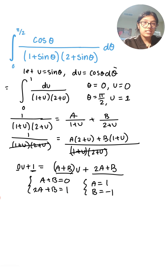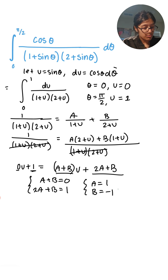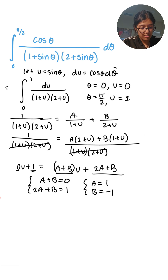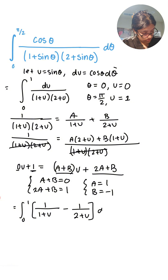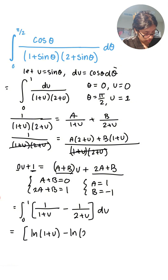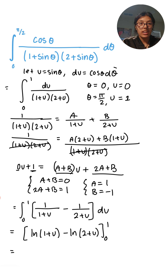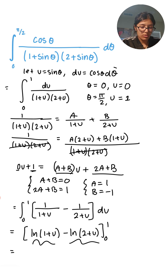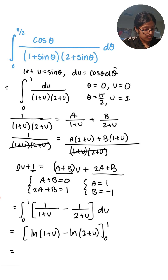From this system we find A equals 1 and B equals negative 1. Now I'll substitute them back in and simplify the integral. As a result, I get the integral in terms of natural logs. Replacing the endpoints from 0 to 1, this gives us our final answer.